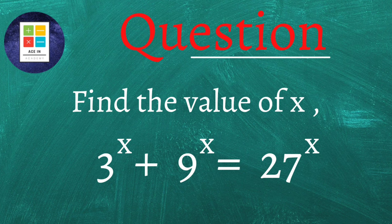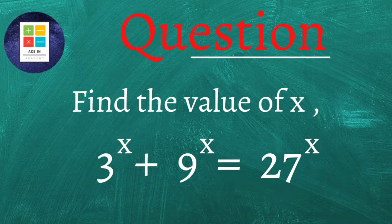The question is as follows: find the value of x in 3 raised to the power x plus 9 raised to the power x is equal to 27 raised to the power x. I would like you to try this question first by yourself and then come back to this video for the solution.